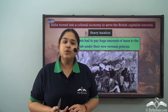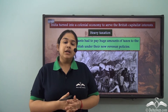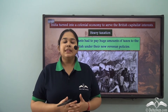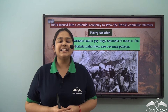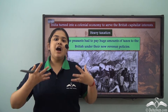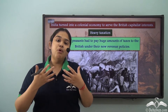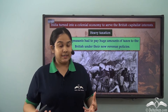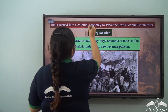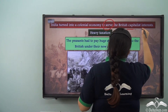The political situation that the British government created basically made India a colony from which the British derived most of its resources. India was turned into a colony to serve British capitalist interests.